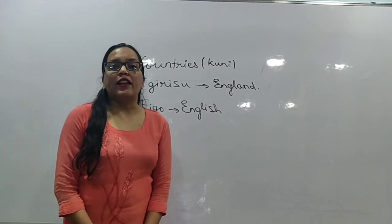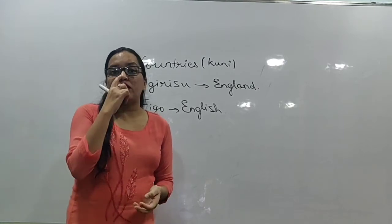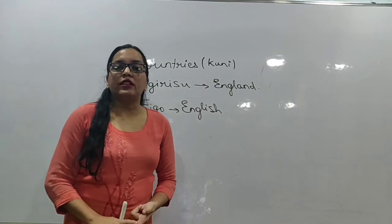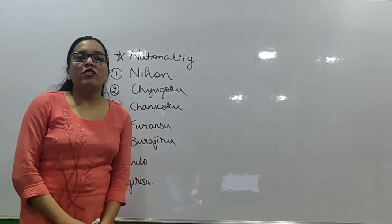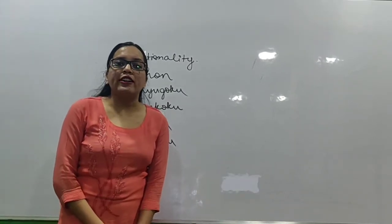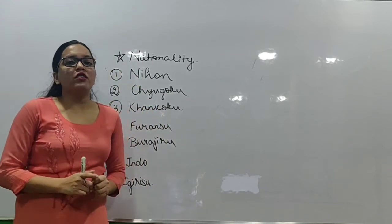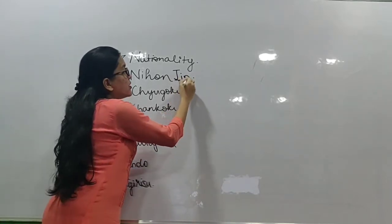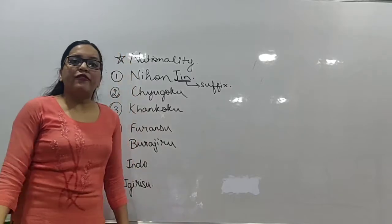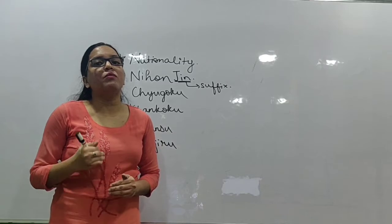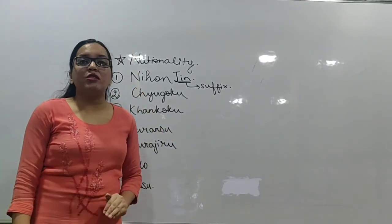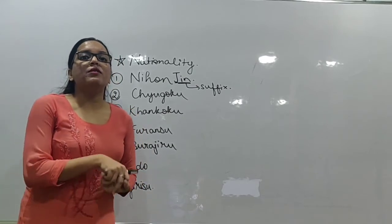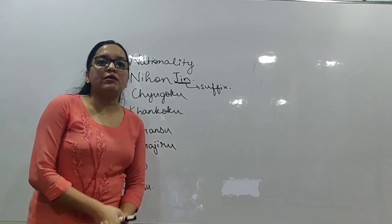Now we need to learn about nationalities. Just as we use the suffix 'Go' for languages, for nationalities we add the suffix 'Jin' after the country name. If we are talking about a Japanese person — not the language — we say 'Nihon-Jin.' If we are talking about Japanese language, it is Nihongo. But for a Japanese person, it is Nihon-Jin.